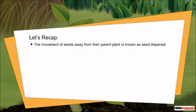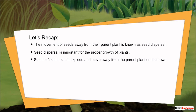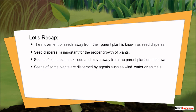Now let's recap. The movement of seeds away from their parent plant is known as seed dispersal. Seed dispersal is important for the proper growth of plants. Seeds of some plants explode and move away from the parent plant on their own. Seeds of some plants are dispersed by agents such as wind, water or animals.